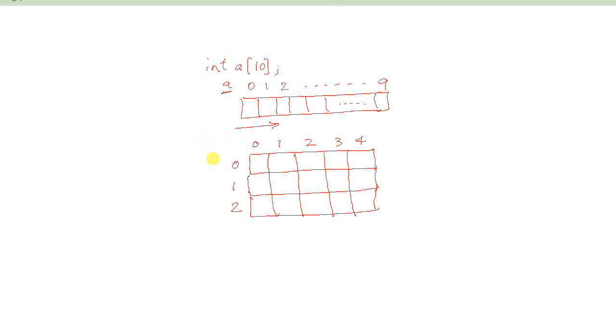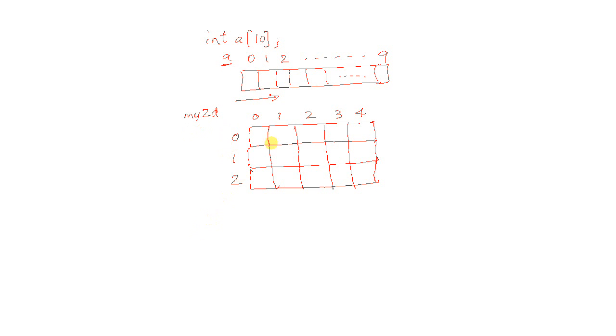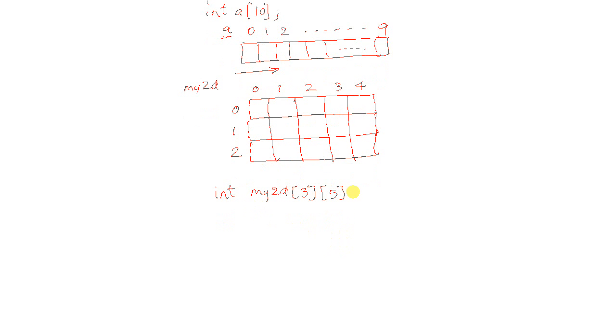So, an array, like this, say its name is my2d. So, my2d array will be declared as int, or whatever type that you want to declare it for, my2d. And first, you have to specify the total number of rows, which is 3. And then, one more pair of square brackets to specify the total number of columns. Something like this. And this will declare this my2d array and we will visualize it like this.